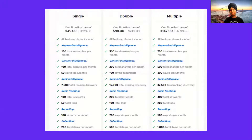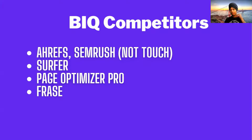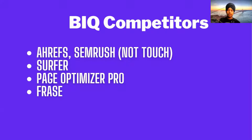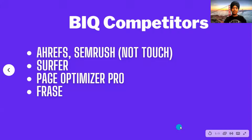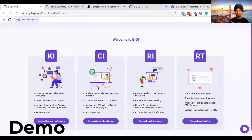If I talk about some basic alternatives of BIQ, AHREF is a good comparison - though AHREF is a much more advanced tool and they are charging $99 a month, where BIQ is only $50. You can say it's a good alternative to SurferSEO, Page Optimizer Pro, and Phrase. So that's all about the quick presentation. Let's jump into the BIQ demo.